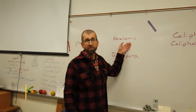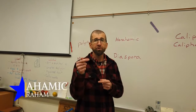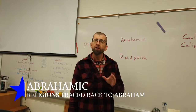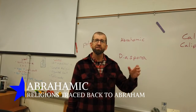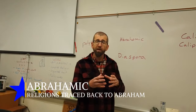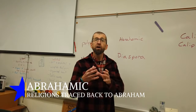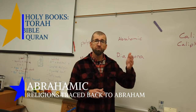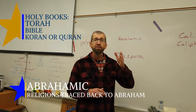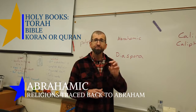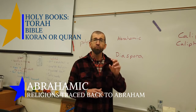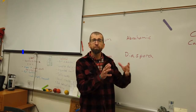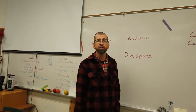The three monotheistic religions — Judaism, Christianity, and Islam — are all what we sometimes call Abrahamic religions, because they can all trace their roots back to Abraham. That would be the biblical Abraham, or Abraham in the Torah, or Abraham in the Quran. The holy book of Judaism is the Torah, Christianity is the Bible, and the Quran is for Islam. They're all tied back to a religion that bases its beliefs on the teachings of Abraham.